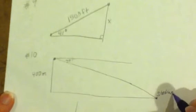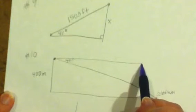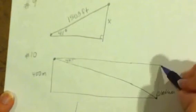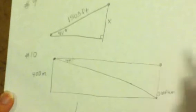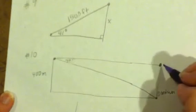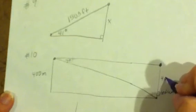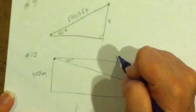And so the blimp is still going to stay up at its height of 400 meters. But we want to know how far it has to fly to get to that location right there. So again, this is 400 meters, and we want to find this distance here.